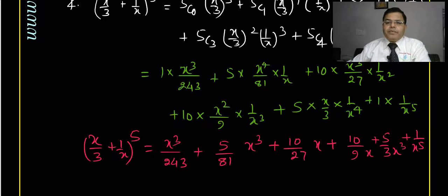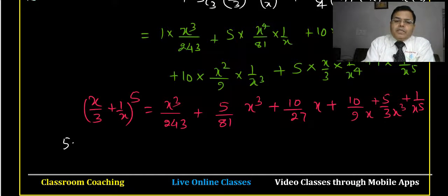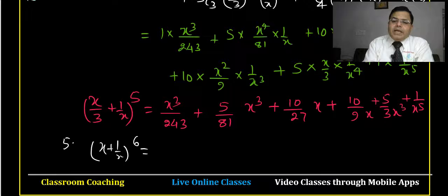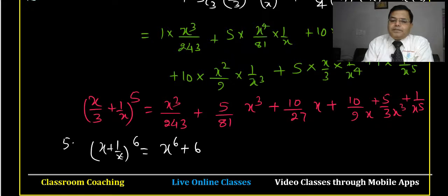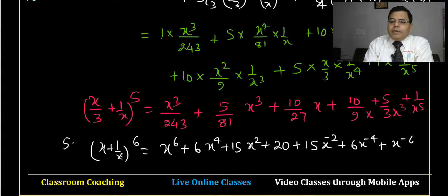Question number 5 is: expand x plus 1 by x, whole to the power 6. Using Pascal's triangle, coefficients for power 6 are 1, 6, 15, 20, 15, 6, 1. So the expansion is: x to the power 6 plus 6 x to the power 4 plus 15 x squared plus 20 plus 15 x to the power minus 2 plus 6 x to the power minus 4 plus x to the power minus 6.